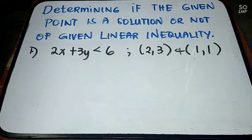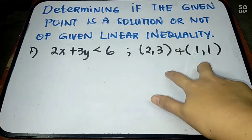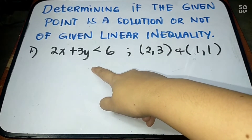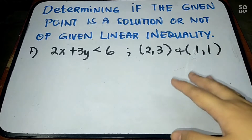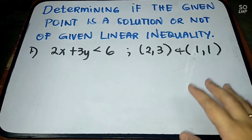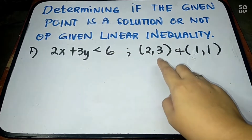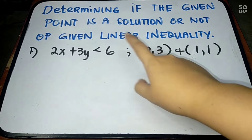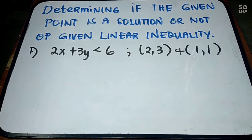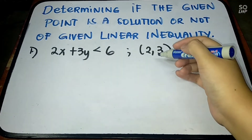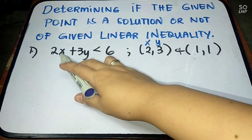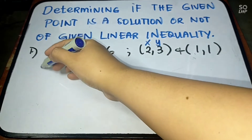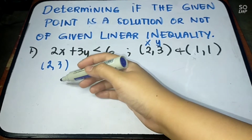Determining if the given point is a solution or not of the given linear inequality. We are going to check if the given points are a solution or not of these linear inequalities. Just like determining if a point is a solution of a linear equation, we are going to substitute the values. Let us have the first one — we have the point (2, 3). Let us try if this is a solution of 2x plus 3y less than 6 by using substitution.